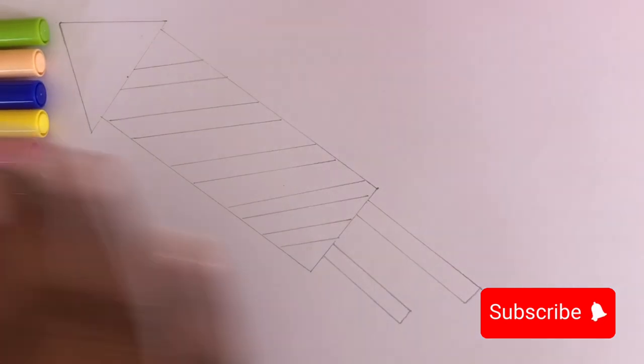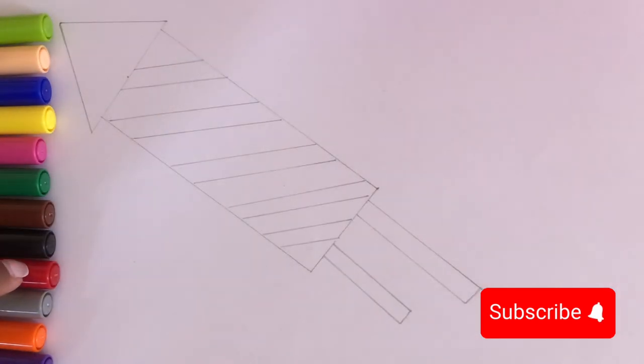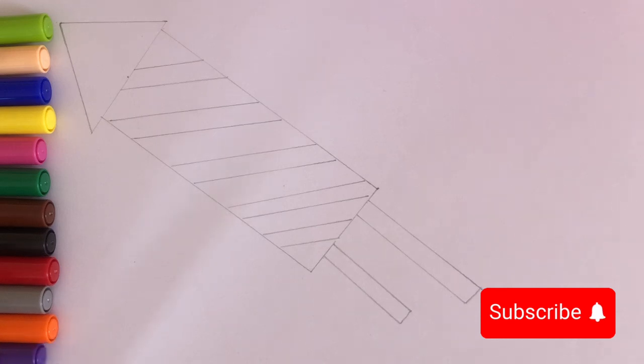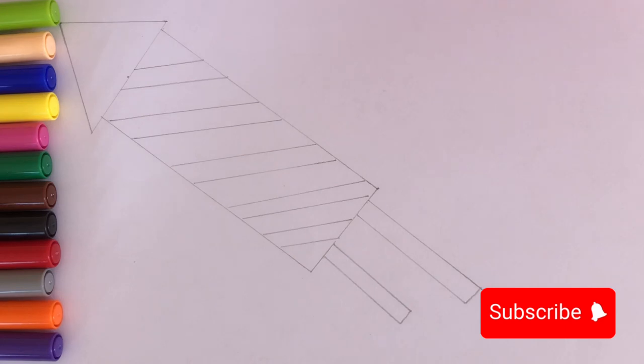Now, let's identify the colors. Green, peach, blue, yellow, pink, dark green, brown, black, red, grey, orange, and purple. So, today we'll be drawing and coloring a cracker rocket.